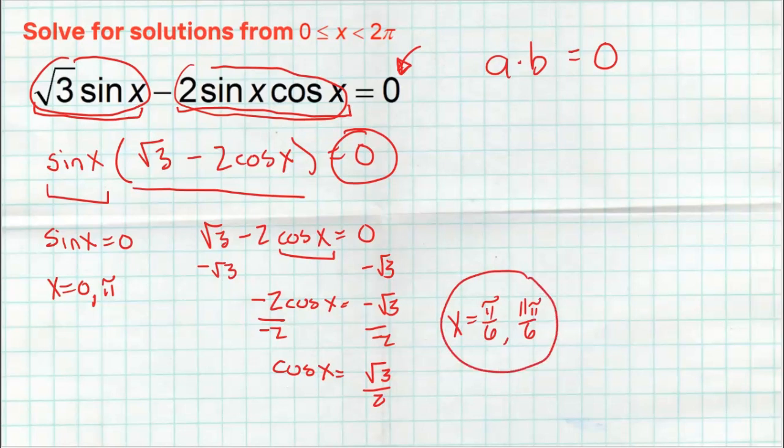This final equation has four total answers for what can make this equation equal to zero.